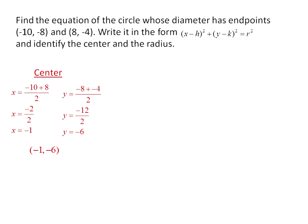We know in our form, x minus h squared plus y minus k squared equals r squared, that h represents the x-coordinate of our center, and k represents the y-coordinate of our center. So we know that h equals negative 1, and k equals negative 6.